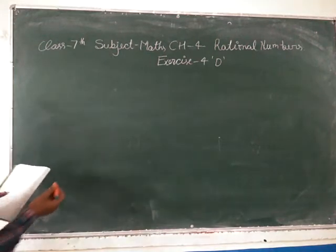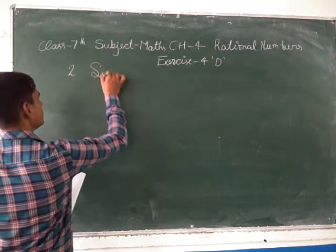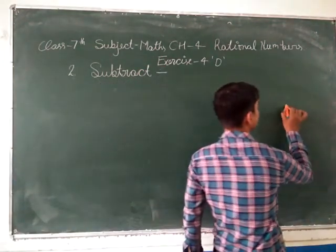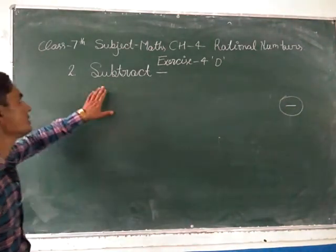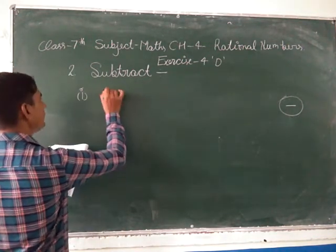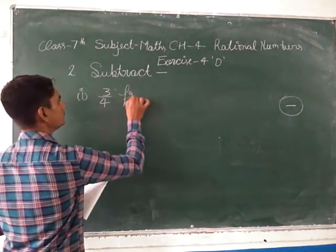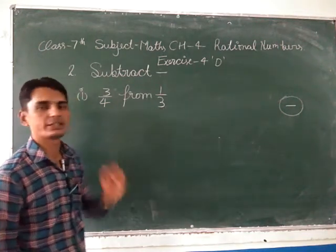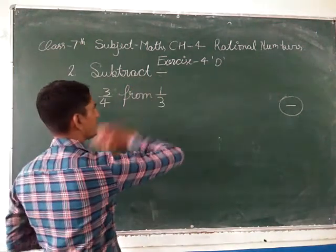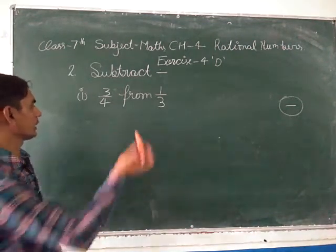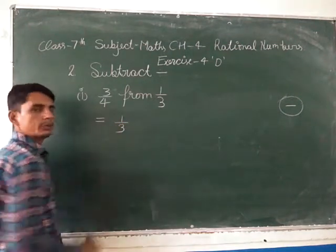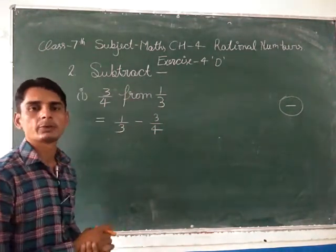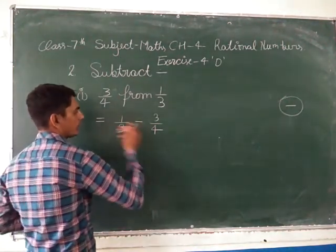After this is the subtract section. Subtract means with a minus sign. First part: subtract 3 upon 4 from 1 upon 3. So we write 1 upon 3 minus 3 upon 4. The denominators are different, so first we find the LCM.